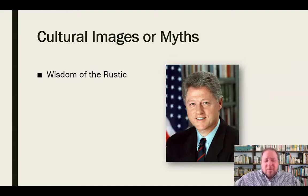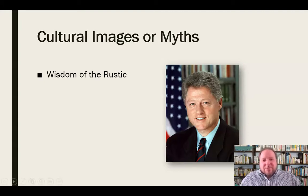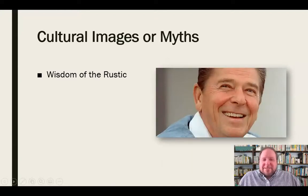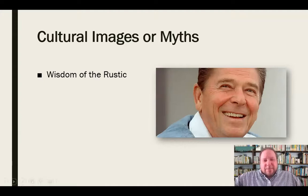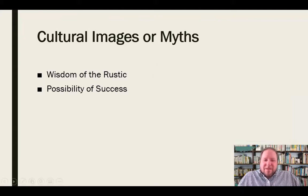Ronald Reagan did the same thing — humble beginnings in Dixon, Illinois, worked as a lifeguard, worked his way up through the system to become president, connected as an everyman. We reach back to these people for inspiration and say these people did it, and so can we. The possibility of success is another cultural image or myth — the American Dream that anybody has the opportunity to do anything as long as they put in the work and drive. Anybody can be president, anybody can be CEO of the biggest company in the world. That possibility of success is part of our culture.